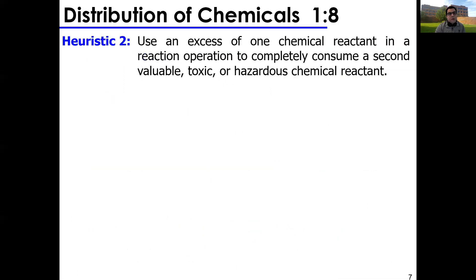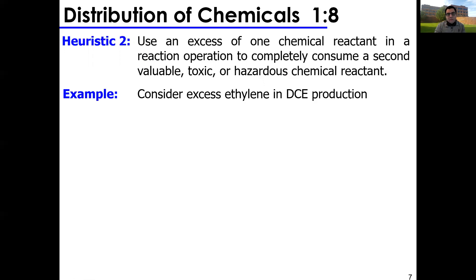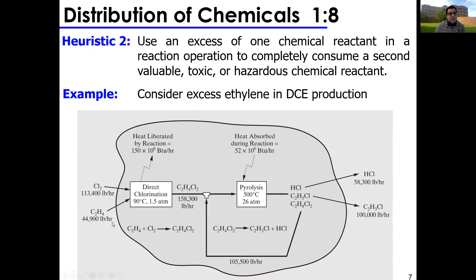Heuristic two: use an excess of one chemical reactant to completely consume a second valuable, toxic, or hazardous chemical reactant. If your reaction does not go to completion, recycle the less expensive chemical to completely use up the more valuable or more toxic one. For example, in dichloroethylene production: I have chlorine and ethylene. I do a chlorination step to get dichloroethylene, then pyrolyze it at high temperature and pressure to get vinyl chloride monomer and HCl.